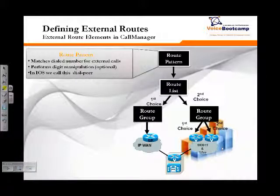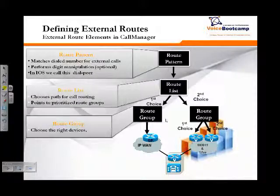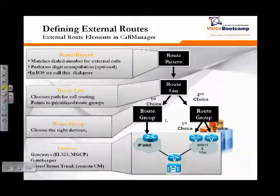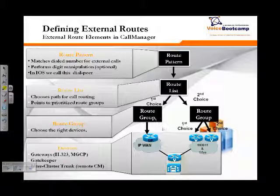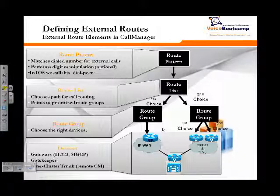Once we have defined the gateways, the next job is to organize them in a route group manner. The route group basically chooses the right gateway. A route group should only contain gateways from a specific city — for example, you might have a gateway in Toronto, a gateway in New York, and another gateway in a third location.